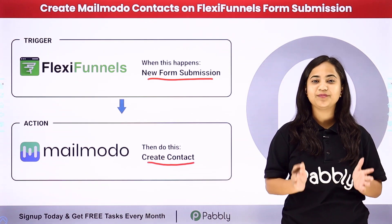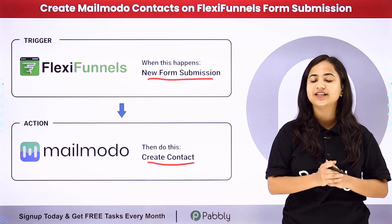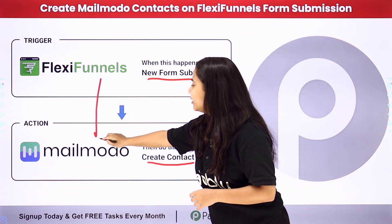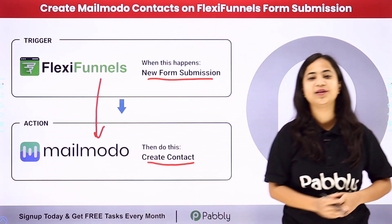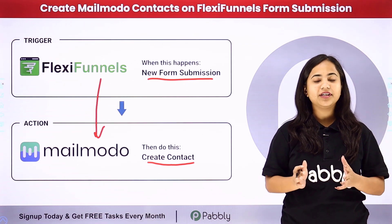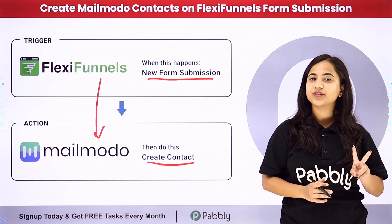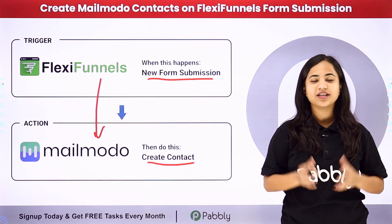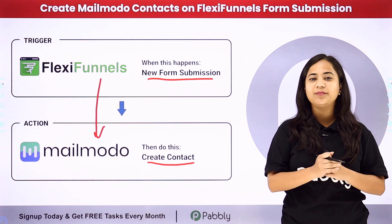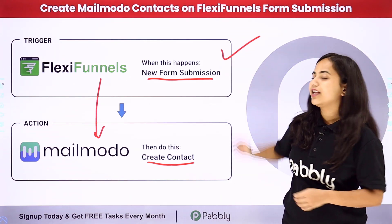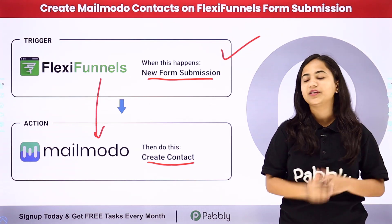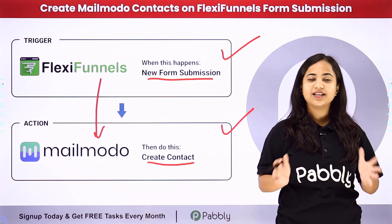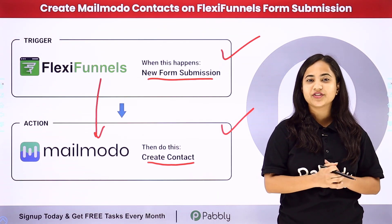For that I am simply going to create a connection between FlexiFunnels and Mailmodo with the help of Pabbly Connect. Pabbly Connect works on two principles: first is Trigger and second is Action. Here my Trigger application is FlexiFunnels and my Action application is Mailmodo. Let me take you to my screen.